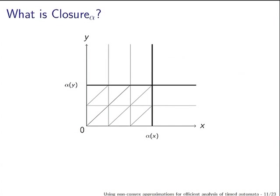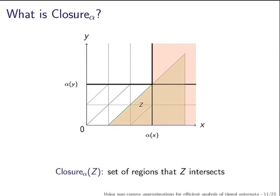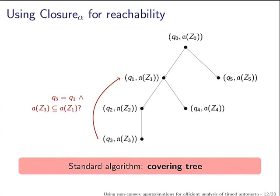Suppose this is the zone — the closure of this zone is just the union of all the regions that intersect the zone. You can clearly see that this is non-convex. So the closure can potentially yield non-convex sets. The standard way to use this is to build the reachability tree of your zone graph, exploring zones one by one with abstraction at each point. When you reach a zone contained in some other already-visited zone, you do not explore it further.